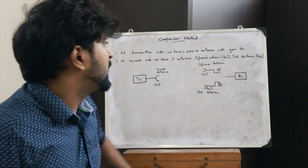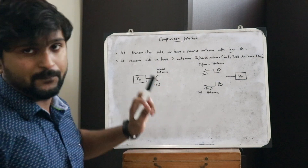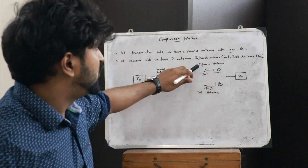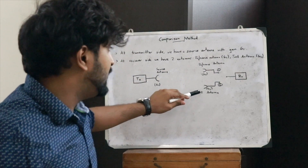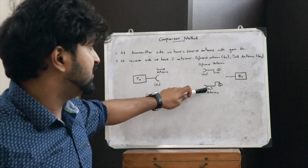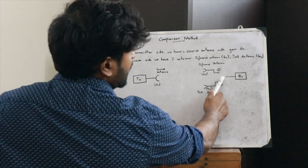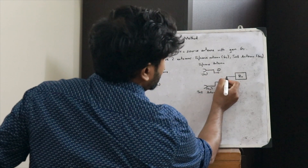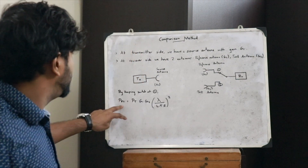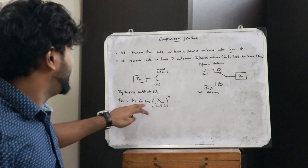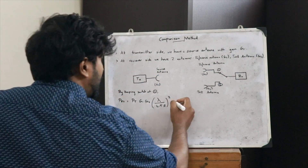The test antenna is also at the receiver side, and its gain G3 is what we need to find. The gain G2 of the reference antenna is a known value. There is a switch at the receiver end. When the switch is in position one — connected to the reference antenna — by applying the Friis equation we get: Pr2 = Pt × G1 × G2 × (λ / 4πr)². Let this be equation 1.